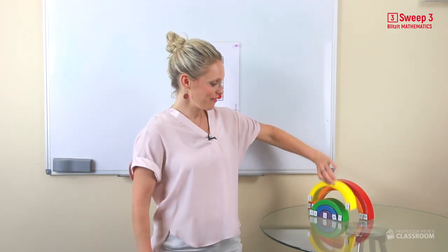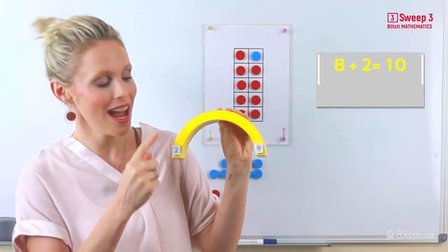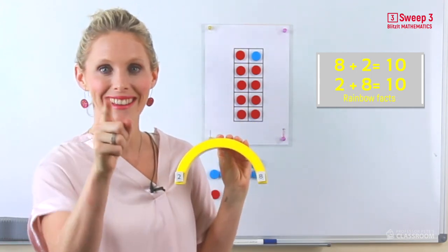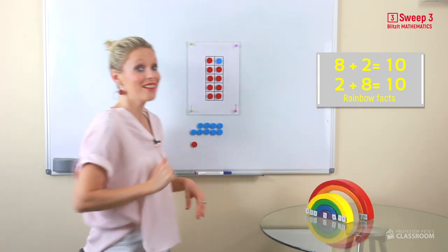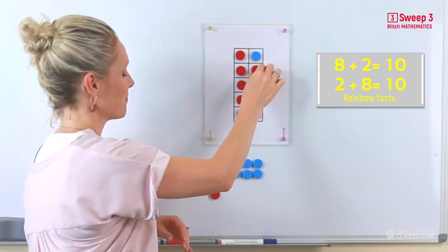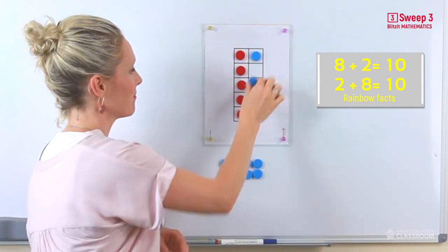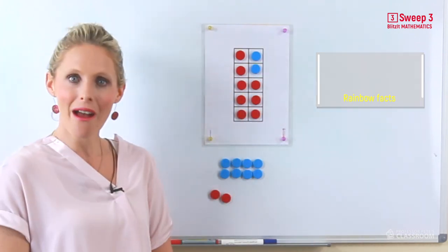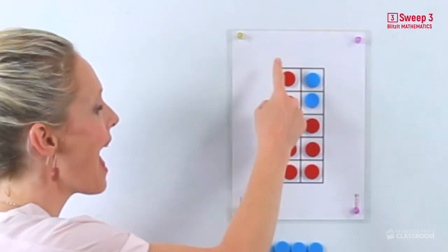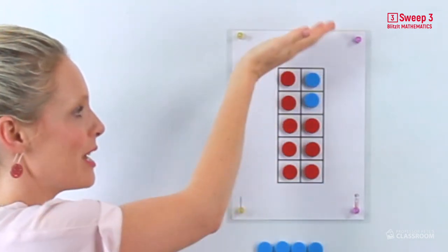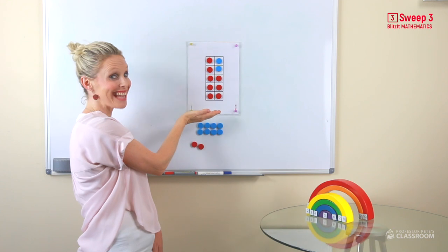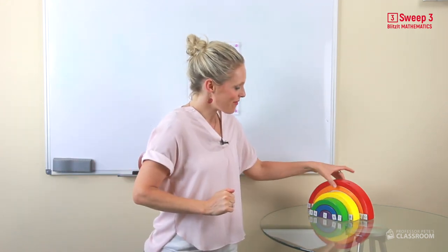Now we have 8 add 2 and 2 add 8 equals, you've got it. Let's see in our tens frame. I love how easy it is to see. 8 add 2 and 2 add 8 equals 10. You guys are so clever.